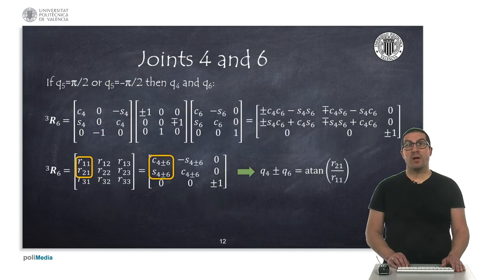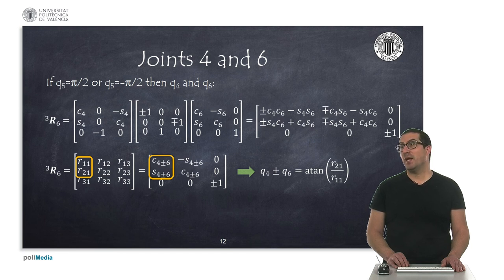In the singular configuration with Q5 equal to those angles, the symbolic expressions simplify to the point that both joints Q4 and Q6 appear in a linear relation. That means that there are infinite possible combinations that will satisfy the actual equation, which implies that we need to provide an arbitrary value for one of the joints and then compute the other joint value.